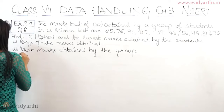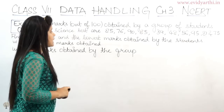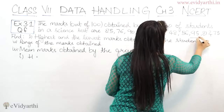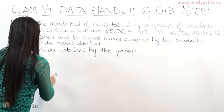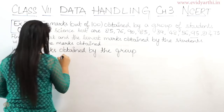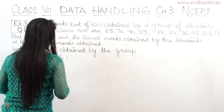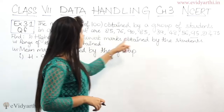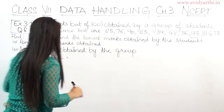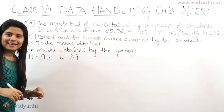First part: highest marks — which is the highest number — that is 95. So highest marks is 95. Coming to the second part, we have to write the lowest marks. Lowest marks obtained is 39.